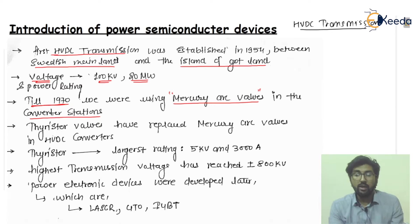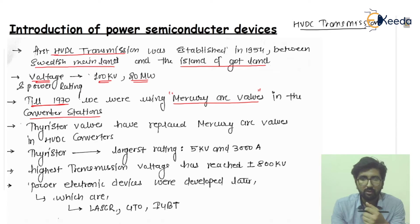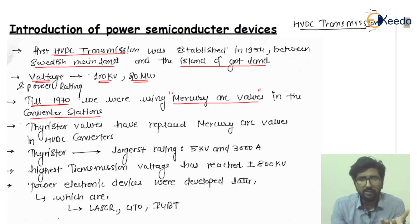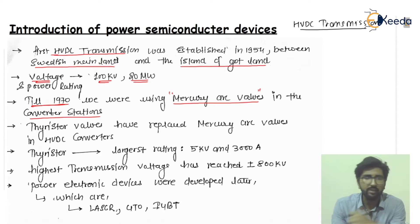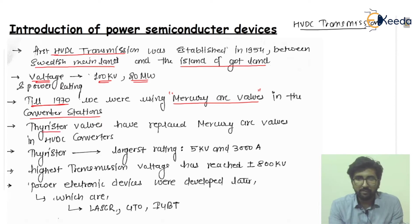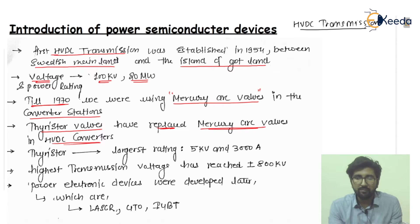In the converter station, the thyristor valve — that is the SCR, silicon controlled rectifier — replaced the mercury arc valves. The thyristor walls replaced the mercury arc valves because mercury arc valves had disadvantages related with controllability. So thyristor valves have replaced the mercury arc valves in HVDC converters.